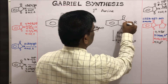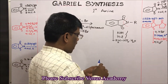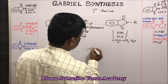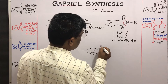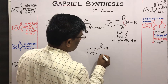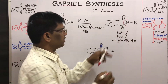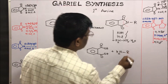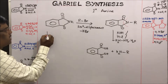Upon hydrolysis it is going to give, similar to our amide, this phthalic acid, which can be removed very easily — phthalic acid — plus our compound of interest, R-NH₂. So the amine can be prepared using this Gabriel synthesis.